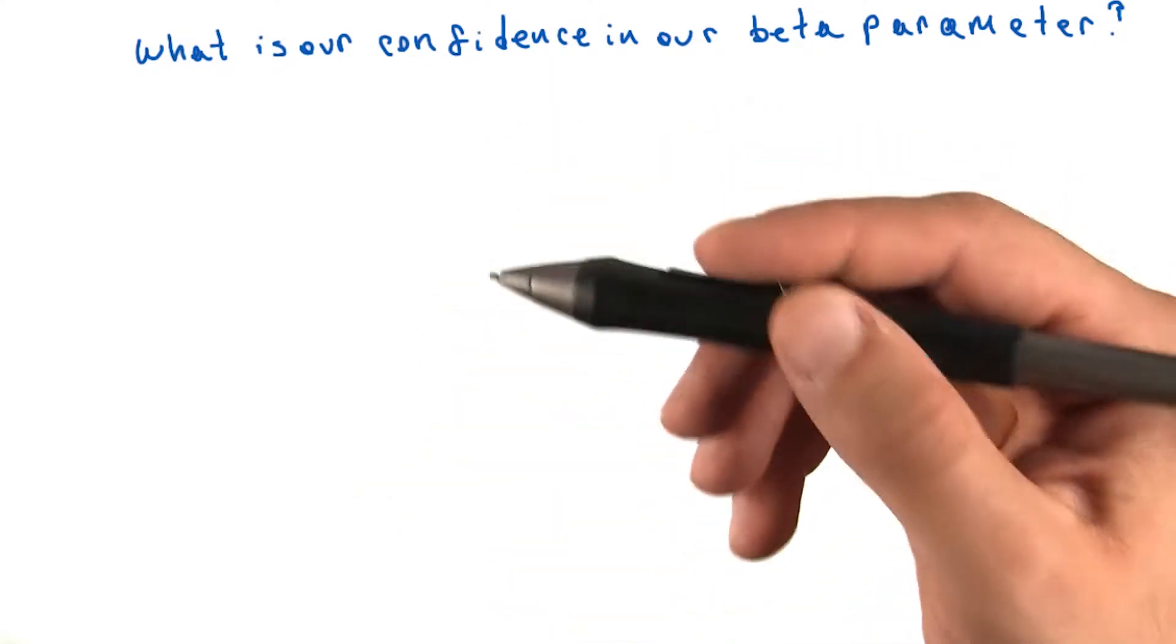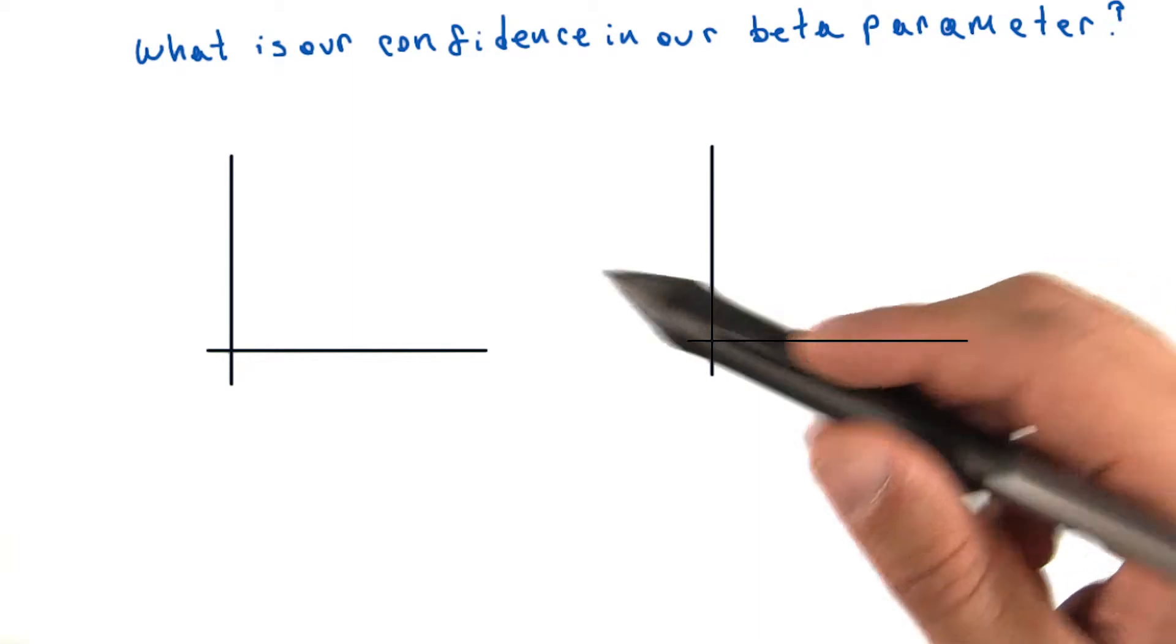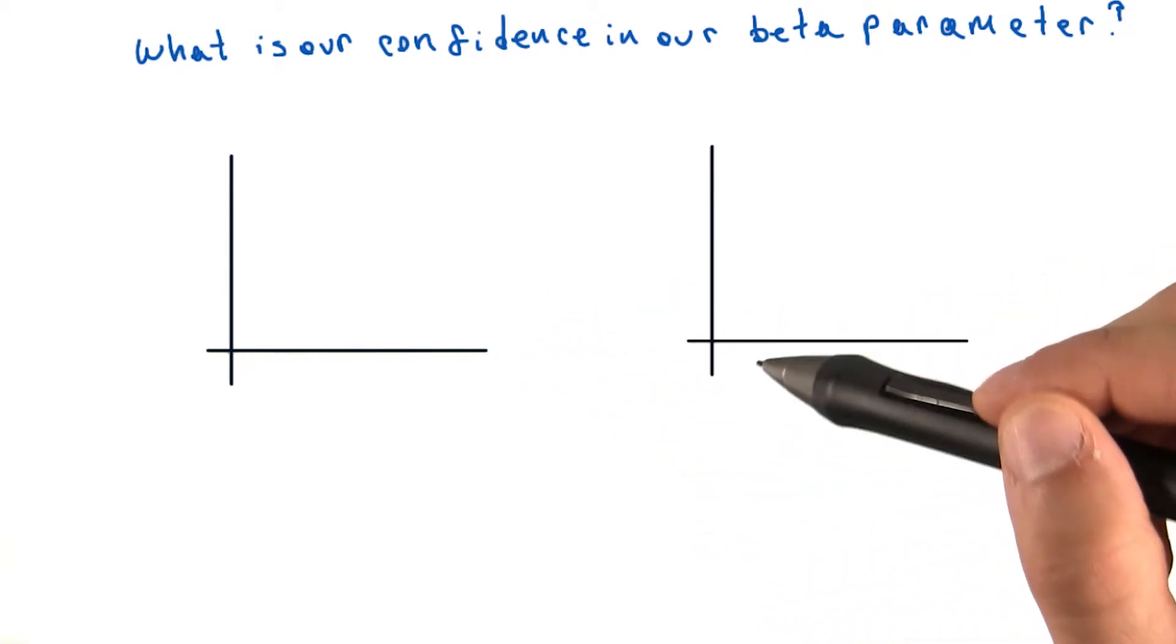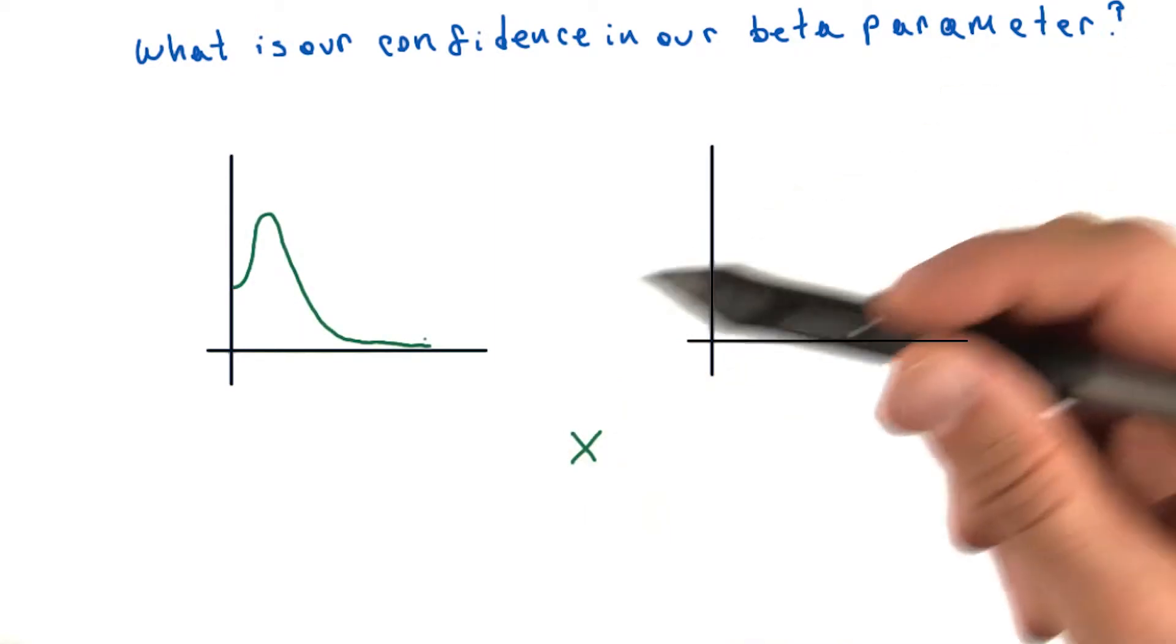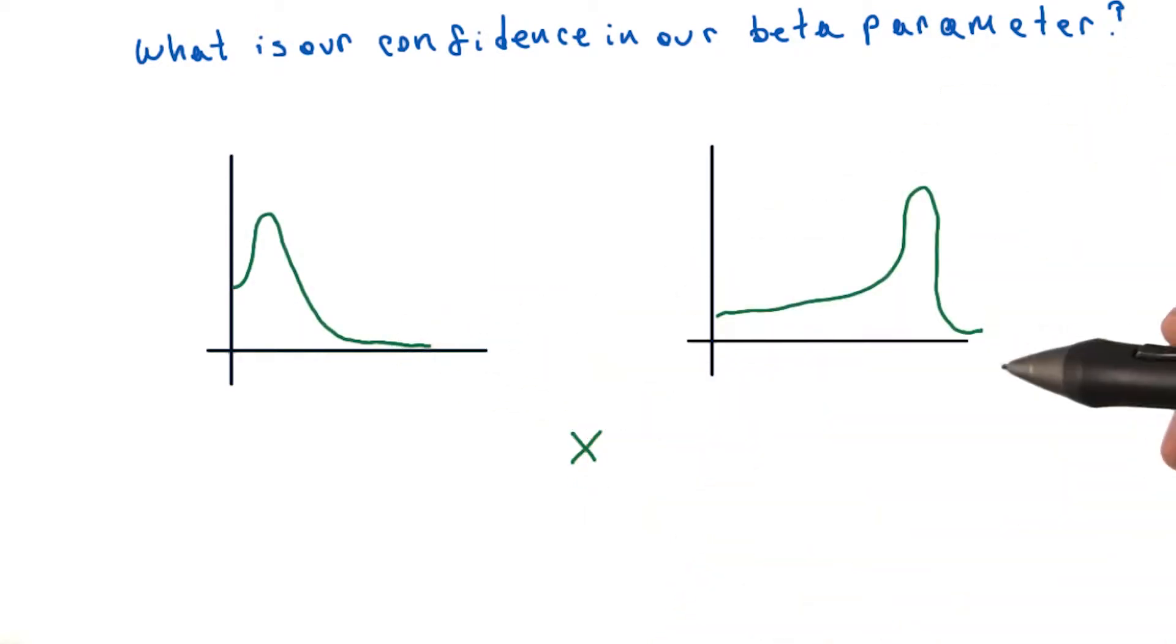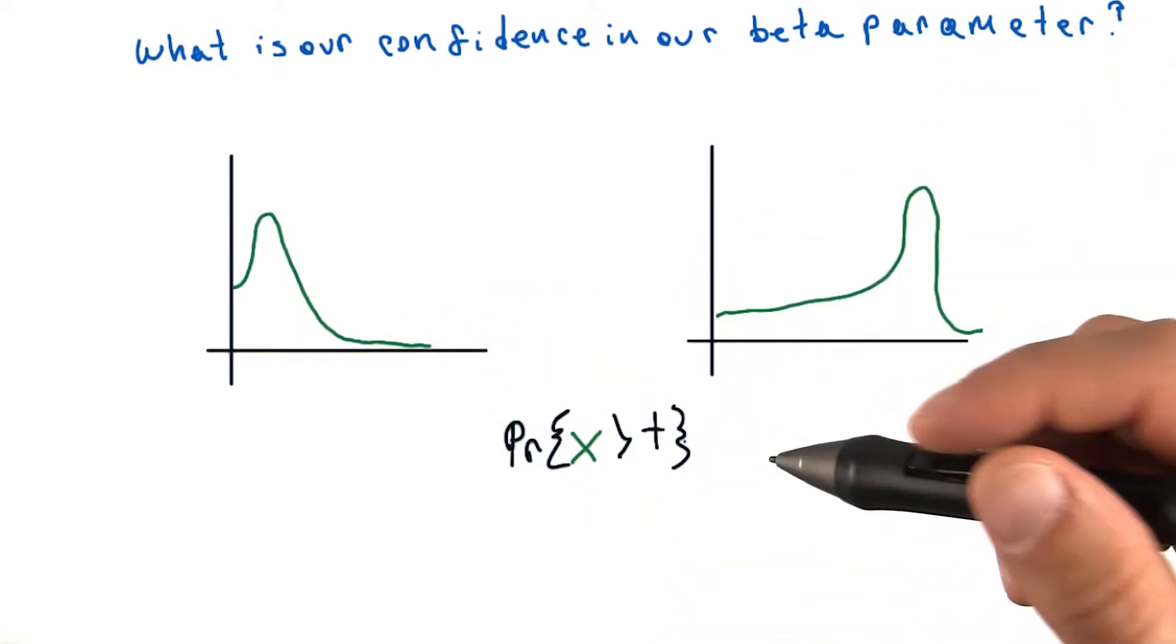To understand why this is, let's consider the following. Imagine that the graph on the left and the right are going to show the PDF for a random variable x. Let's suppose the one on the left looks like this, and the one on the right looks like this.